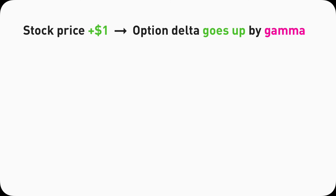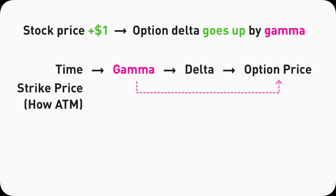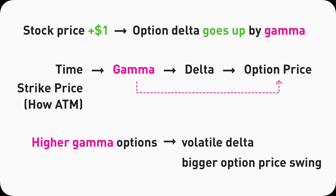To tie everything together: Gamma defines how much the option Delta will go up by the Gamma amount for every single dollar the underlying stock moves, whether it's a call or put. Gamma only affects Delta, and Delta is the one that affects option prices, so Gamma indirectly affects option prices. Two things affect Gamma: first, time — the closer to the expiration date, the higher the Gamma. Second, strike price — the closer the strike price is to the current share price (more at the money), the higher the Gamma. Higher Gamma means a bigger Delta change and more unstable option prices; lower Gamma means a more stable Delta and more stable option price changes.